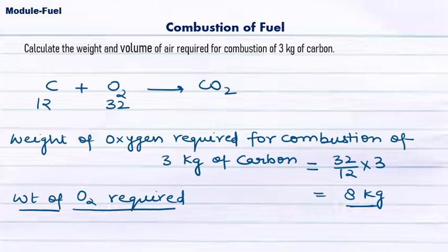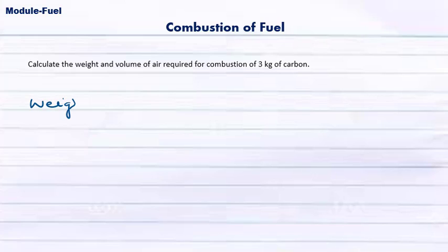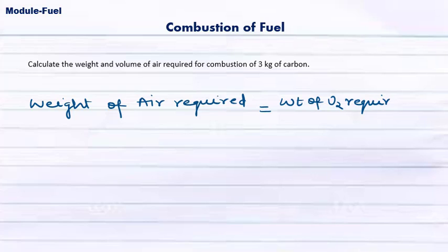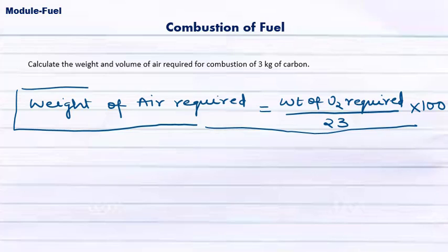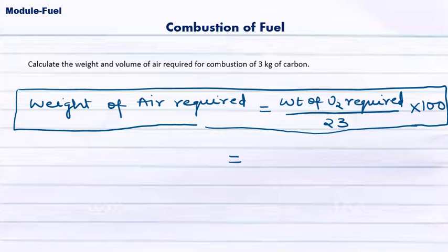We are asked for weight of air required and volume of air required. To calculate this, we know that air contains 23% oxygen by weight. So weight of air required = weight of O₂ required / 0.23 = 8 / 0.23, which gives 34.78 kilograms. This is the answer for weight of air required.